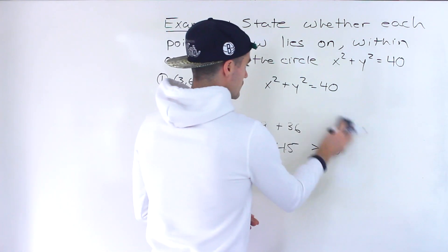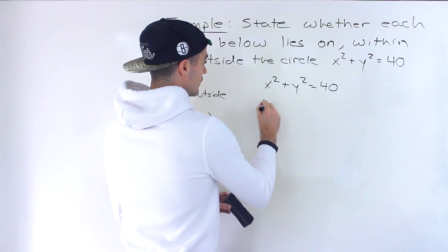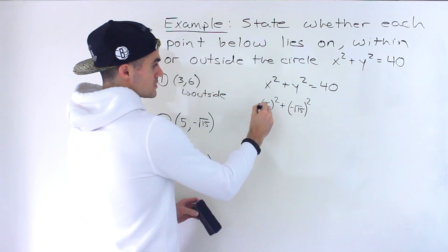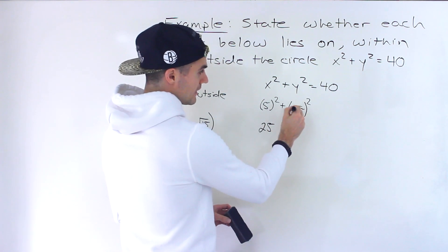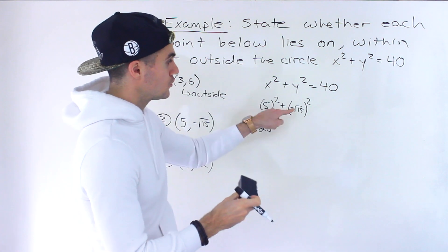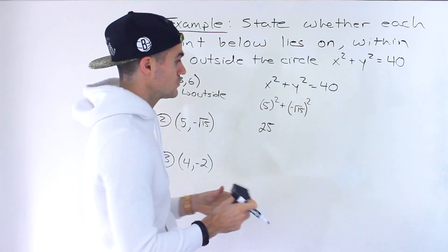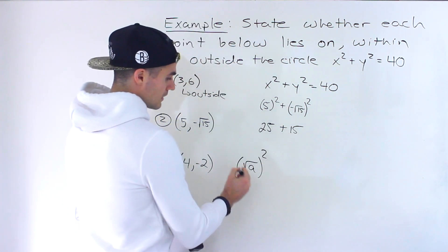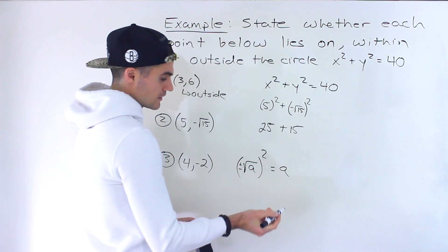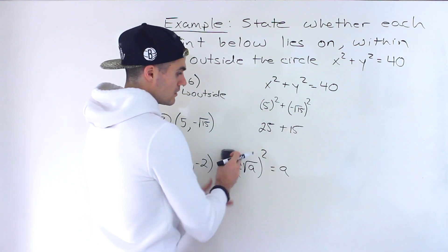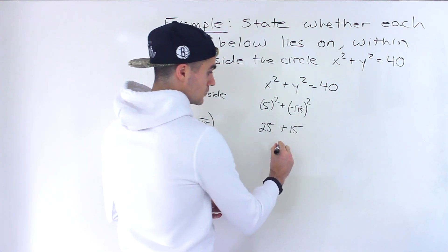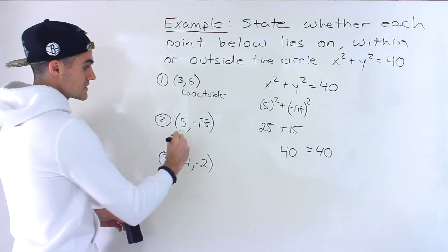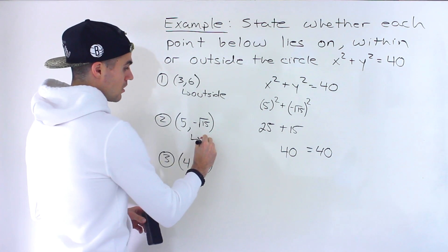What about 5 and negative root 15? We'll have 5 squared plus negative root 15 squared. 5 squared would be 25 and a negative to the power of 2 gives us a positive, then root 15 to the power of 2 would just give us 15. Whenever you have a root squared, it's just going to equal that value under the root. Notice that this equals 40, which is equal to the right side. Left side equals the right side so this point lies on the circle.